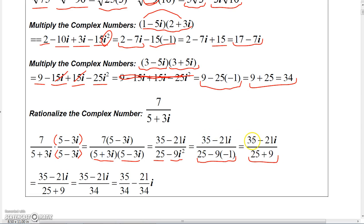Now the top - we finished that a long time ago: 35 - 21i. So now I have (35 - 21i)/34. Now your instructor might ask you to write this in complex form a + bi...